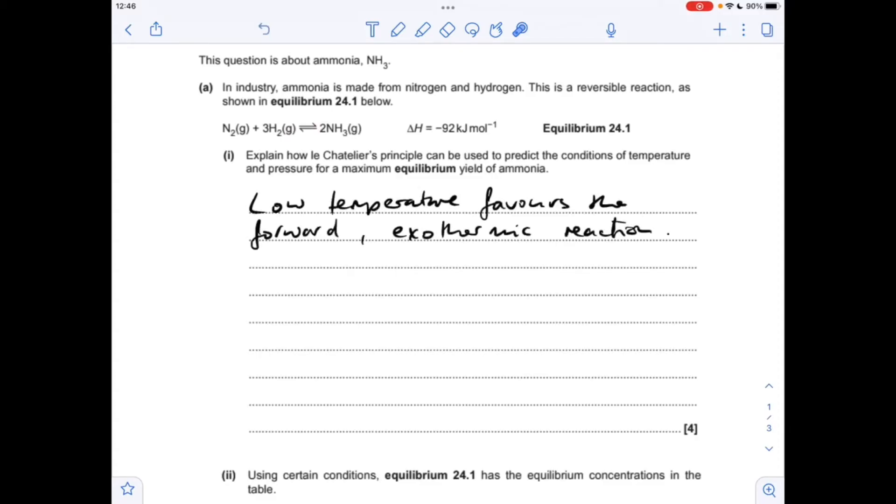Moving on to pressure, we've got to look at the total number of moles on the left and right hand side of the equation. So on the left we've got 4 moles, on the right we've got 2 moles. So a high pressure is going to favour the side of the reaction with the fewest moles, in other words, push it forward.